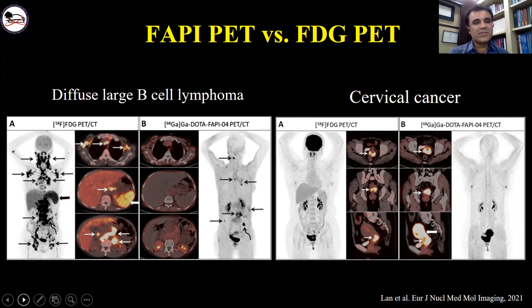For example, in this case there is intense uptake on FDG PET in different regions — head and neck, chest, and abdominal pelvic regions — while there is very low uptake in the corresponding FAPI PET-CT.